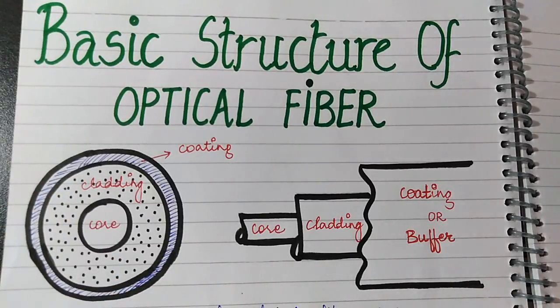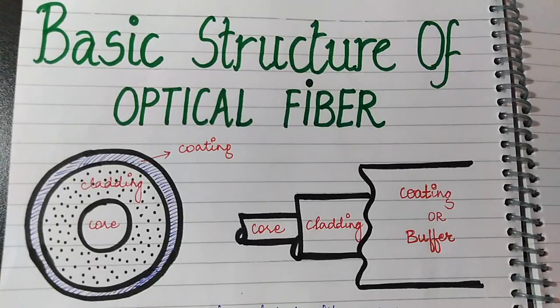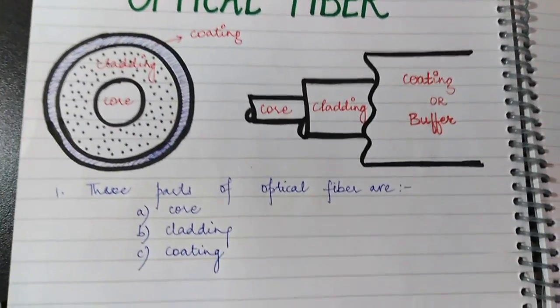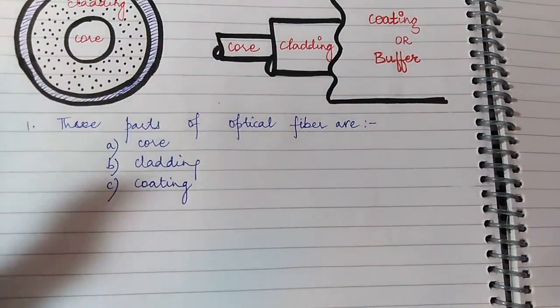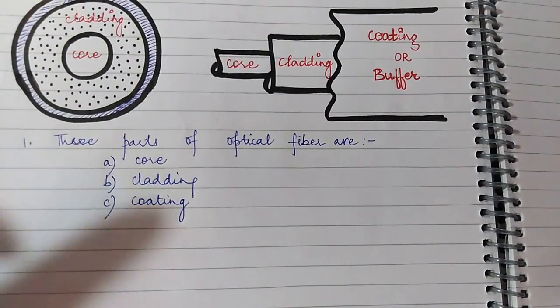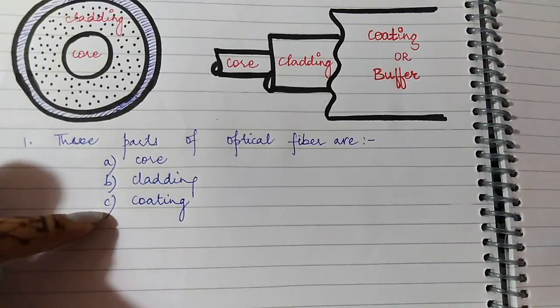So I would be writing three points about the optical fiber to make you understand what it is. The first point is that there are three parts of optical fiber as shown: core, cladding, and coating.